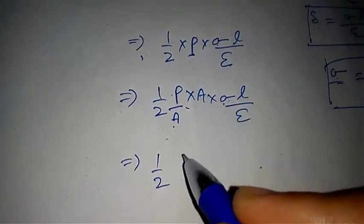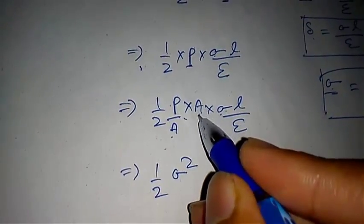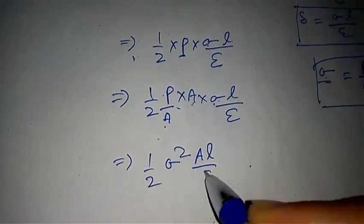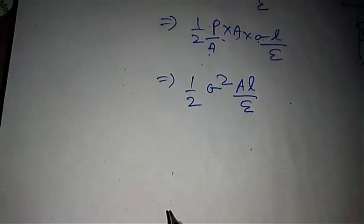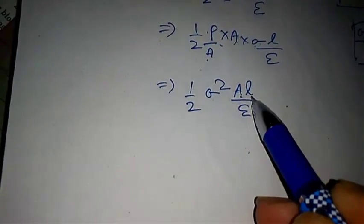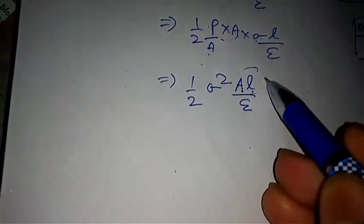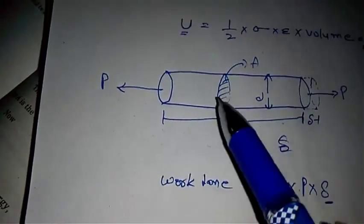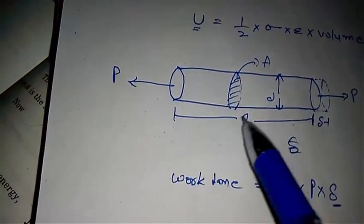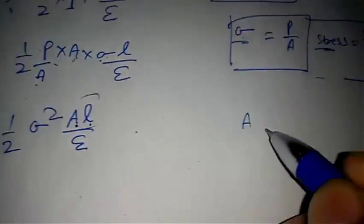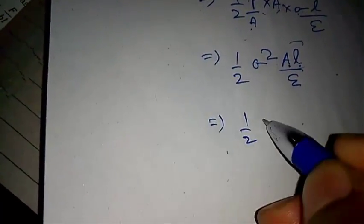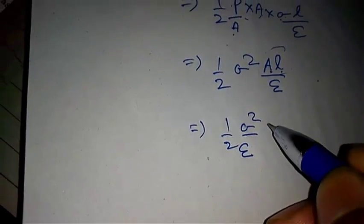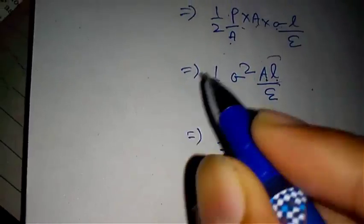Substituting P with sigma times A, this becomes one-half times sigma squared times A times L divided by E. Now, A is the cross-section area and L is the length, so A times L equals the volume of the rod. Therefore, this becomes one-half times sigma squared divided by E times volume.